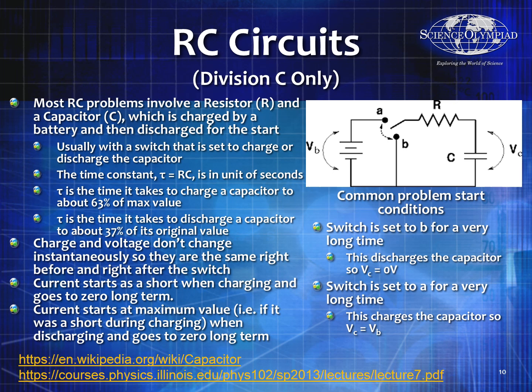Problems will often tell you the switch is set to a particular setting for a long period of time, so you can determine whether it's fully charged or discharged. For example, if the switch is set to B for a very long time, the capacitor is completely discharged — voltage and current both go to zero. If set to A for a very long time, the capacitor is fully charged, no current flows through R, and the voltage of the capacitor equals VB. So the maximum voltage in this case would be VB.